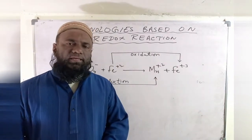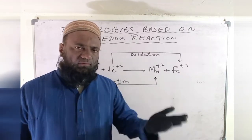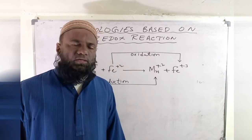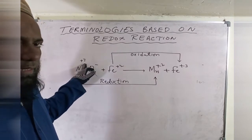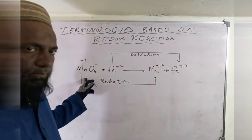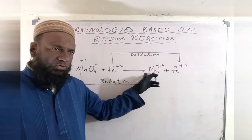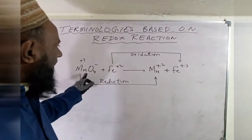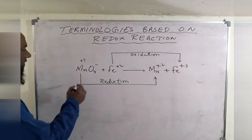What is a Reducing Agent? A Reducing Agent is called the donor of electrons — the one who donates electrons is called the Reducing Agent. The one who gains electrons is called the Oxidizing Agent. Here, Mn has a +7 charge, meaning Mn had a deficiency of 7 electrons. Going left to right, only a deficiency of 2 electrons remains, so Mn gained 5 electrons. The electron gainer is the Oxidizing Agent.